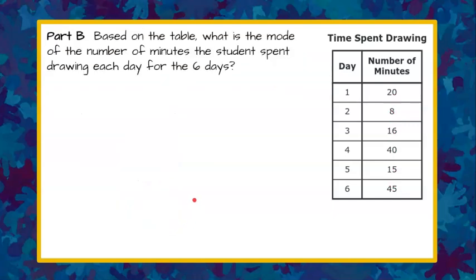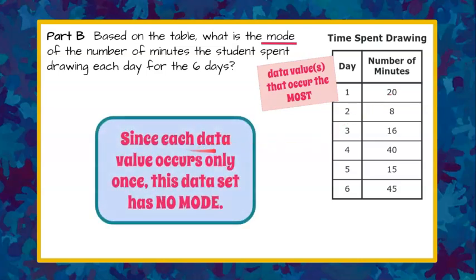Part B. Based on the table what is the mode of the number of minutes the student spent drawing each day for the six days. Please pause now and come back when you're done. Welcome back. So we're looking to find the mode of the data represented in this table. To understand mode it's the data value or values that occur the most. So mode can have no value so no mode. It can have one number that occurs more than once or can have multiple data values that occur the same number of times. Looking over our data and knowing from the list that we made in Part A we know that none of the items occur more than once. Therefore we can conclude that since each data value only occurs once this data set has no mode.